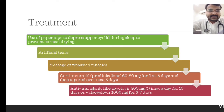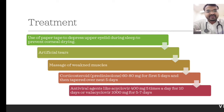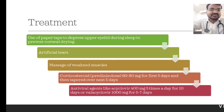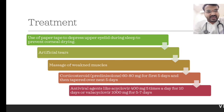From the medical point of view, the treatment is corticosteroid — prednisolone 60 to 80 mg for the first 5 days, then tapered over the next 5 days. Some physicians also prefer an antiviral agent like acyclovir 400 mg five times a day, which should be given along with the corticosteroid. Corticosteroid is the main line of treatment and antiviral can be added alongside it.